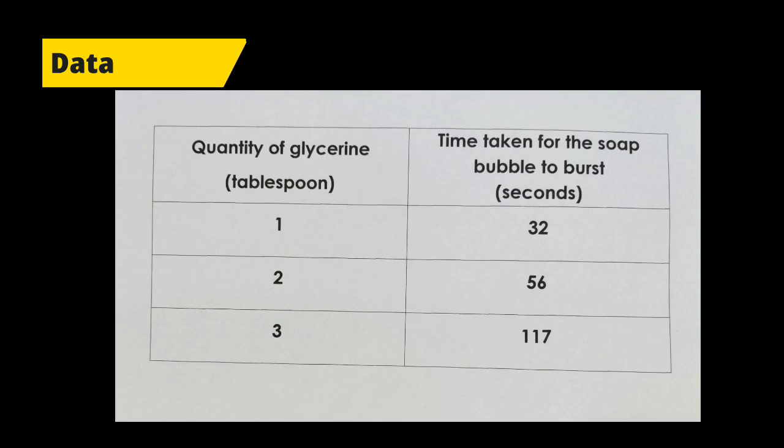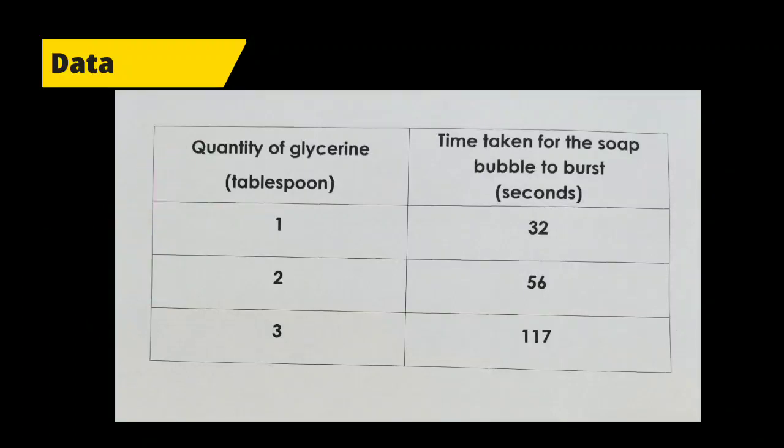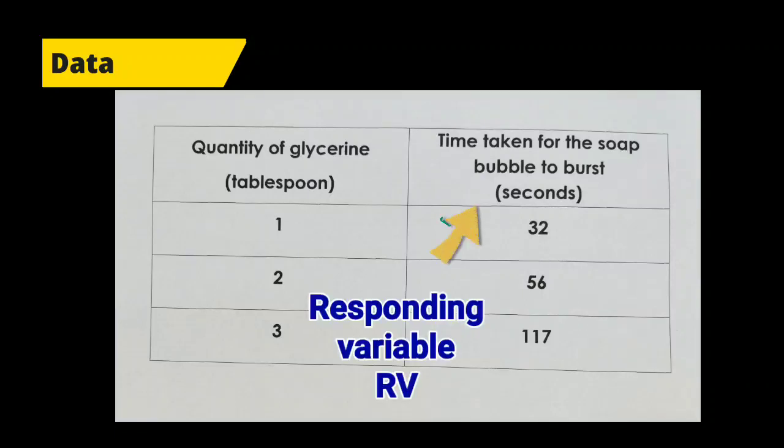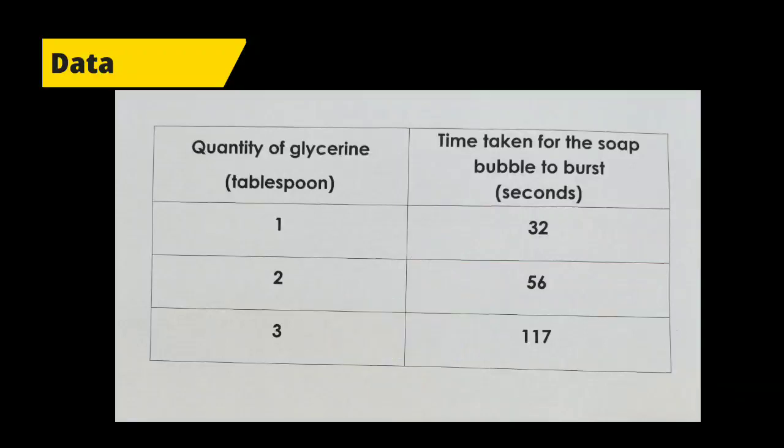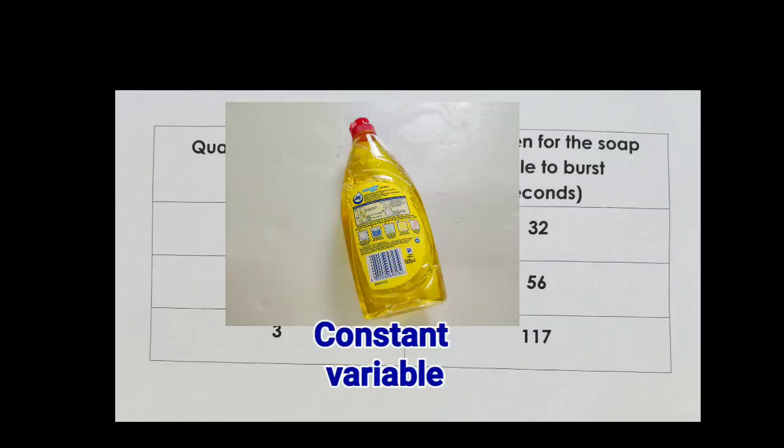Now this is the data that is obtained from the experiment that we had carried just now. From the table shown, we can find out the manipulative variable, which is the quantity of glycerin. I change the quantity of glycerin. Then the responding variable is the time taken for the soap bubble to burst, which is the result from the experiment. The constant variable is the type of dish washing liquid. I use the same brand of dish washing liquid.